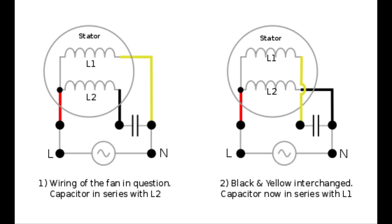It helps reverse the polarity of the motor's windings, enabling the blades to rotate in the opposite direction. This is particularly useful during the winter months when you want the fan to push warm air down from the ceiling.